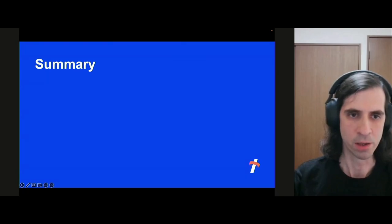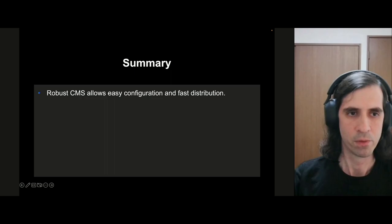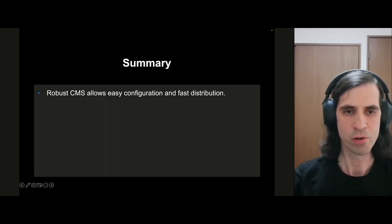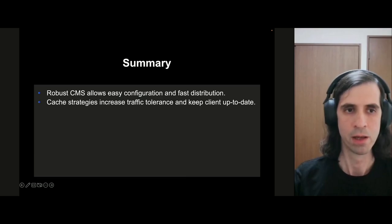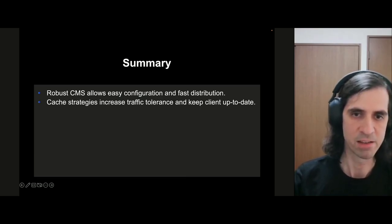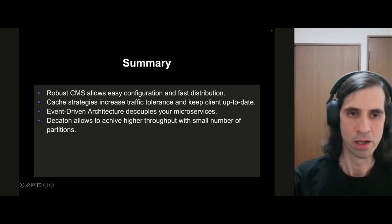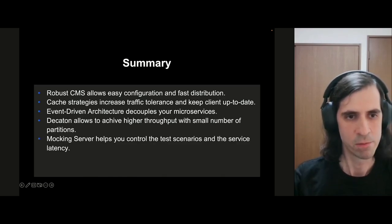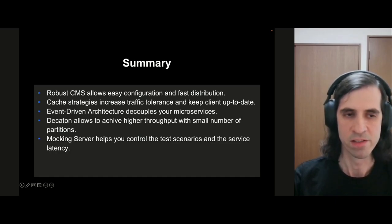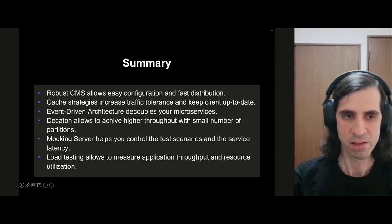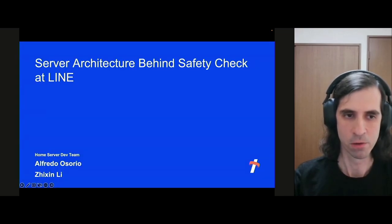In summary: a robust CMS allows easy configuration and fast distribution. Cache strategies increase traffic tolerance and keep clients up to date. Event-driven architecture decouples your microservices. Decathlon allows you to achieve higher throughput with a small number of partitions. A mocking server helps you control test scenarios and service latency. And load testing allows you to measure application throughput and resource utilization. Thank you very much.